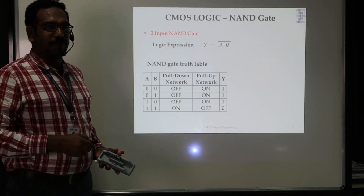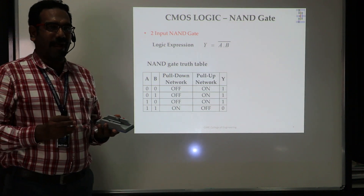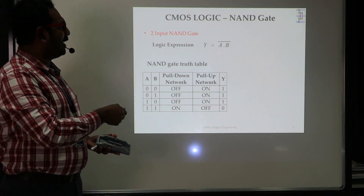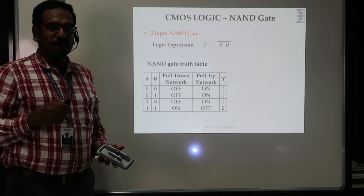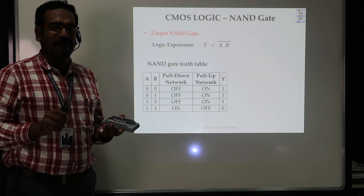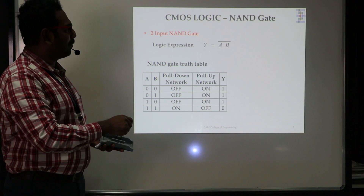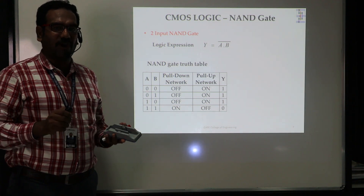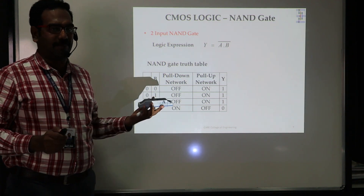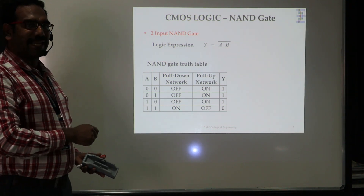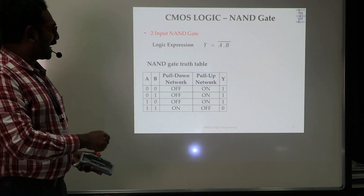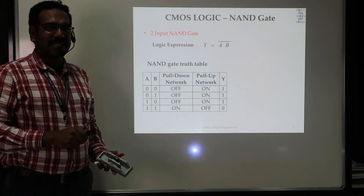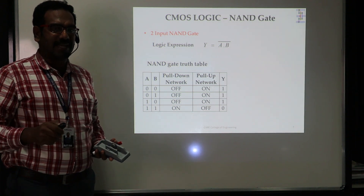Here I have taken a simple two-input NAND gate. A two-input NAND gate receives two inputs and produces one output. The logic expression is Y equals A dot B, the whole complement. CMOS can implement only complementary logic, which is why I have chosen the NAND gate — it has a complementary function. Similarly, we can implement NOR logic and XNOR logic whenever a complementary function is present. Here is the truth table for the NAND gate, showing inputs A and B, the conditions for the pull-down and pull-up networks, and the resulting output.